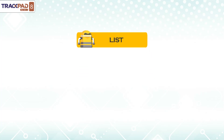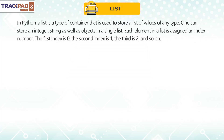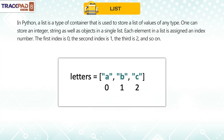List in Python. A list is a type of container that is used to store a list of values of any type. One can store an integer, string, as well as objects in a single list. Each element in a list is assigned an index number. The first index is 0, the second index is 1, the third index is 2, and so on.